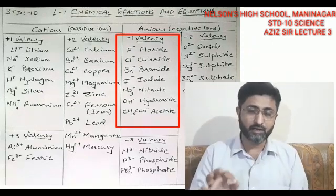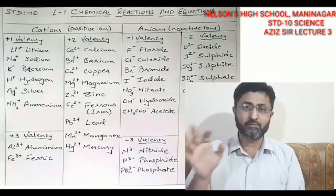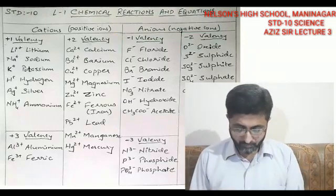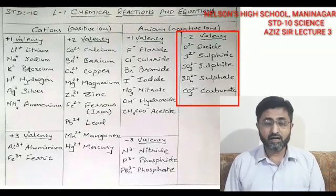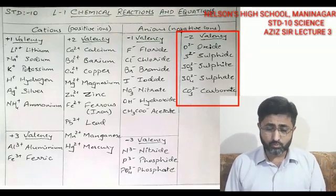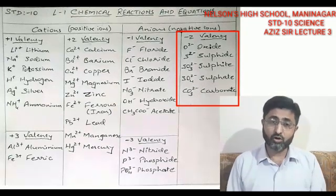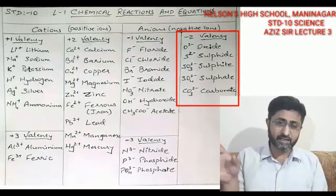Further minus one anions: NO3− is nitrate, OH− is hydroxide, and CH3COO− is acetate. For example, when Na+ combines with CH3COO−, it forms sodium acetate.